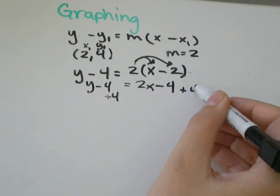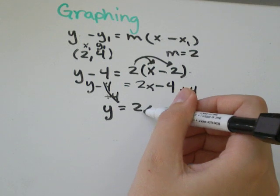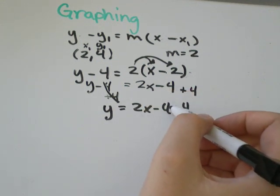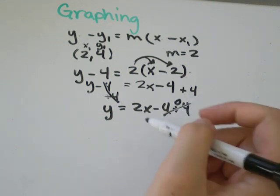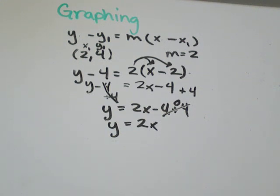So let's add 4 to both sides. Now this will cancel out and we'll get y equals 2x minus 4 plus 4. Negative 4 plus 4 is 0. So the equation of that line is y equals 2x.